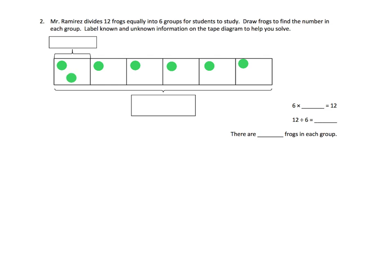And I have more frogs. So that's 7, 8, 9, 10, 11, 12. So there we go — we are now done. We've got the answer: there are 2 frogs in each group.